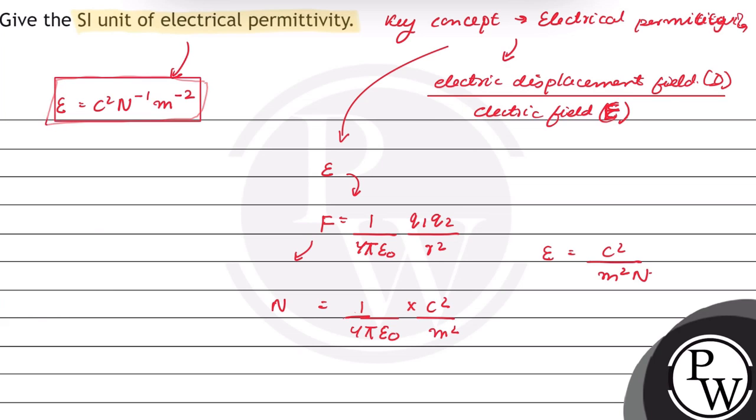Therefore, the SI unit of electrical permittivity will be coulomb squared Newton to the power minus 1 meter to the power minus 2. Hope you understood this well. Best of luck.